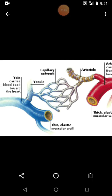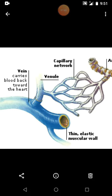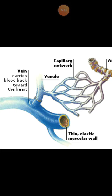Coming to the next one, that is the vein. Here you can see the bluish colored structure that is called vein. The veins carry blood towards the heart from the different body parts — or we can say they carry blood back towards the heart.